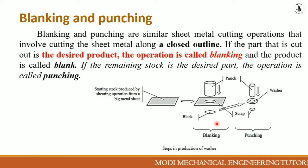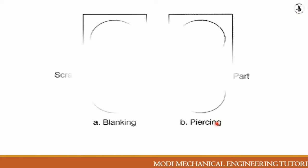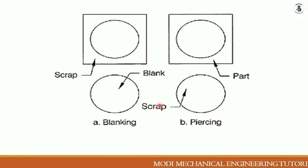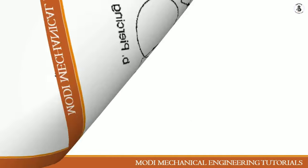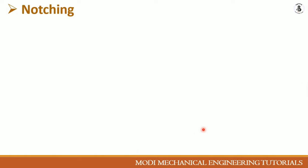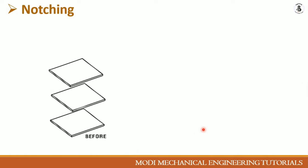Blanking and punching are similar sheet metal cutting operations involving cutting the sheet metal along a closed outline. If the part cut out is the desired product, the operation is called blanking; if the cut-out blank is the required part, it is blanking. If the remaining stock is the desired part, it becomes punching or piercing.